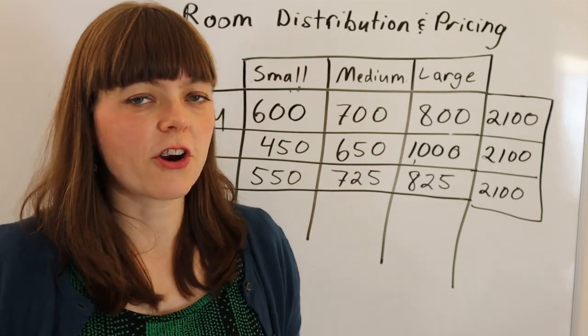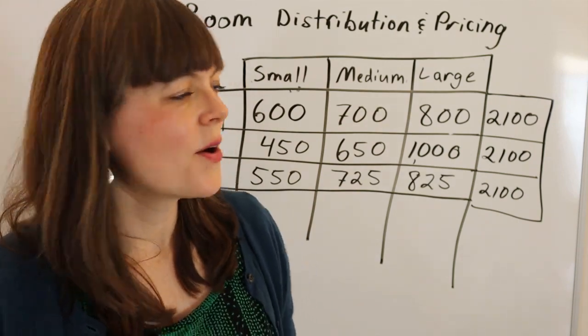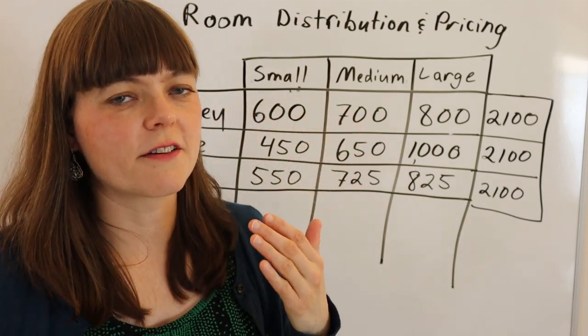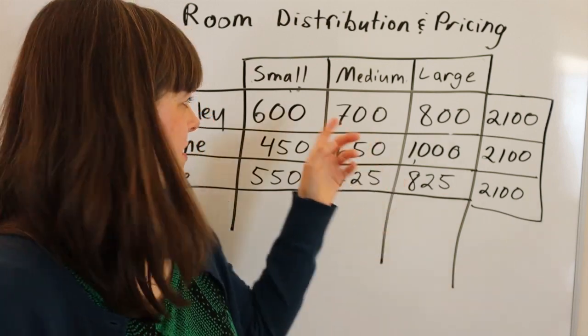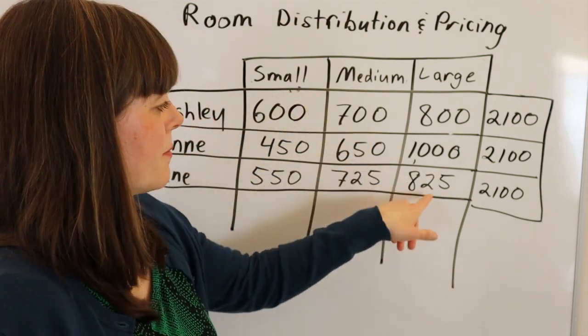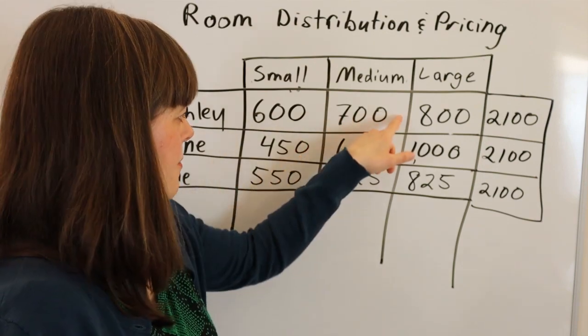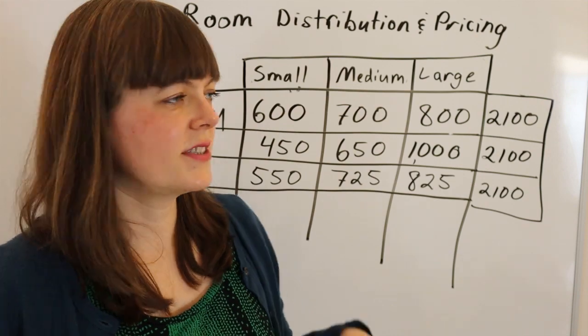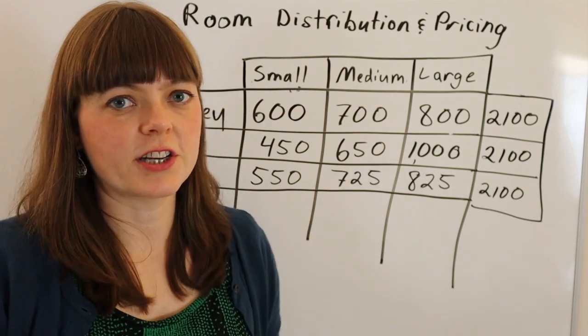So how do you figure out which person should end up in which room? Well, basically, you look at all the possible allocations of women to rooms - so me in the small, Anne in the medium, Jane in the large, me in the medium, Anne in the small, Jane in the large - you look at all the possible ones, and you see when you add up the bid for each of those.